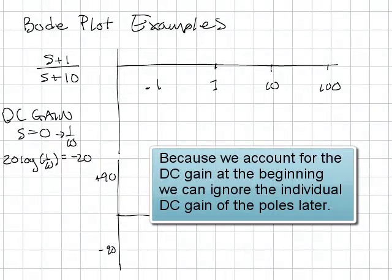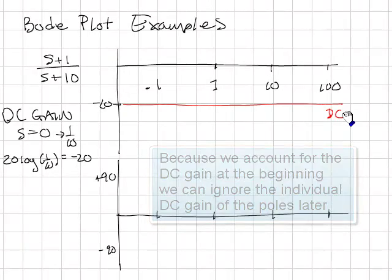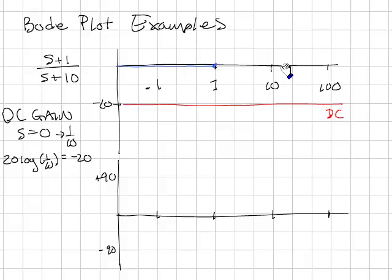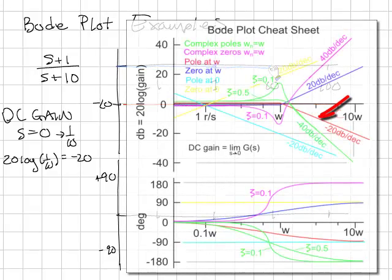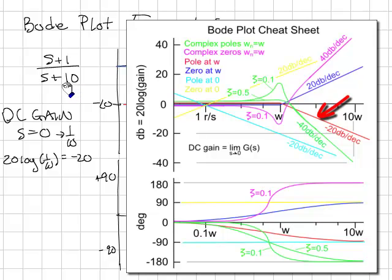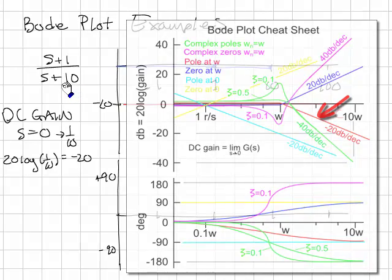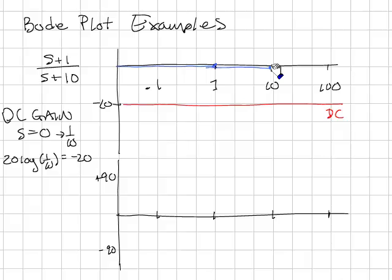So first plot the DC gain. I need some scale on here. Next, put in the poles. We have a pole at 10. The pole at 10 has a straight response until we reach the breakpoint 10 and then it goes down at minus 20 dB per decade. Decade is 10 times the frequency. There's 10 and 20 dB is right here. Then it has a slope like this and it just continues on out.